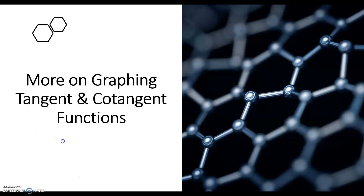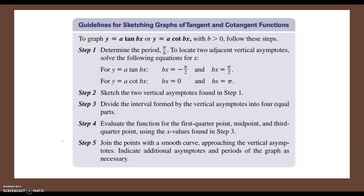There are a few steps we need to follow in order to graph these. First, we want to start by graphing just the basic y = a·tan(bx) or y = a·cot(bx), just like before with the sine and cosine function, except this time once you graph those, you will apply the horizontal and vertical translations. The only thing that's different here is the period. For sine and cosine we used 2π divided by b, but since the period of tangent and cotangent is π, the new period is π divided by b.